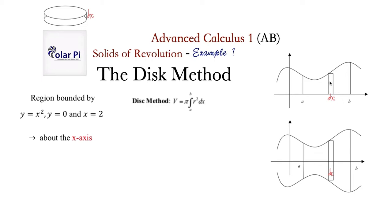We need to figure out the volume of one of the disks — say the disk formed when this rectangle spins about the x-axis. Its radius is the height of this rectangle, which is f of x. So the radius is f of x, or y, because frequently we see y as being f of x.